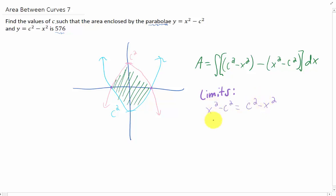If I add X squared to both sides and add C squared to both sides, we get X squared equals C squared, or X equals plus and minus C. Well that was pretty fun. So this X value here is C, and that X value there is negative C. So our limits go from negative C to positive C.